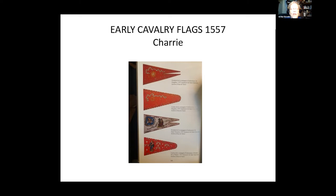Early cavalry flags started to look more like the standards we talked about — tapered, sometimes becoming square. They had pictures on them, mottos, and pictures of saints. They looked much like they did 100 years before, and would continue to look this way up until the 1800s.